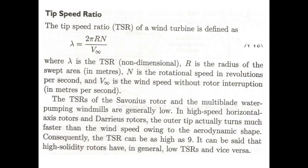Mathematically, TSR lambda equals 2-pi-R-n divided by V-infinity, where V-infinity is the undisturbed wind speed in m/s, n is the rotational speed, and R is the rotor radius. The Savonius rotor (a vertical axis wind turbine) and multi-bladed rotors used for pumping have generally very low TSR. As the number of blades increases, the tip speed ratio decreases.